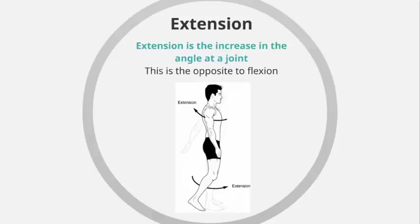At the knee, using the example of kicking a ball, extension would be when we are actually executing the shot itself — the leg straightens and the foot goes towards the football. At the shoulder, extension would see our arms come downwards and swing behind our body; a good example is when using arms in skiing, putting poles in the snow and pulling ourselves forwards. At the hip, a good example of extension is the preparation phase of kicking a football, where our thigh swings backwards, increasing the angle between the midsection and the thigh.